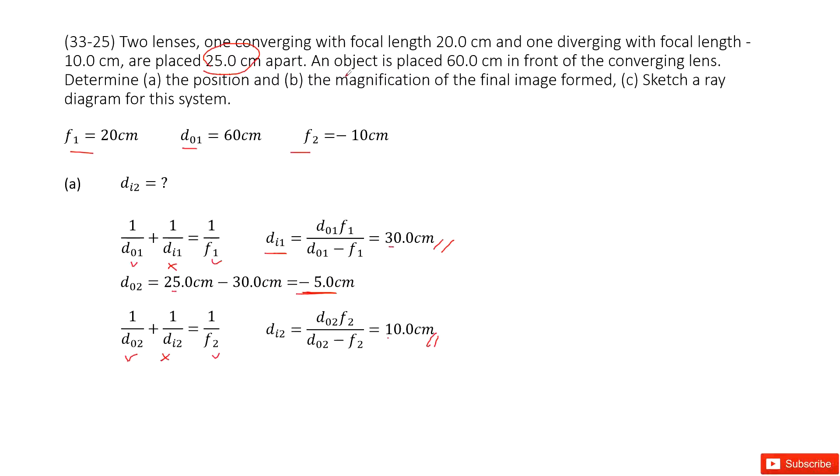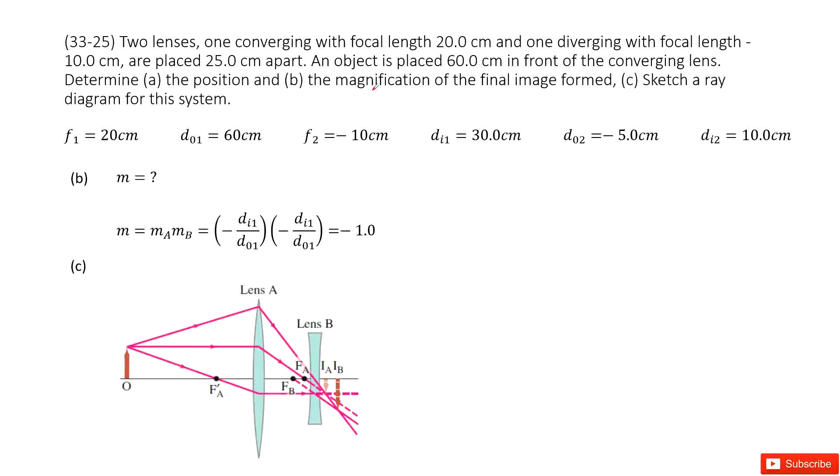The second part is to find the overall magnification. The overall magnification is a product of m1 and m2. So we write down the definition for m1 and m2. You can see all the quantities are given, so you can get the answer.